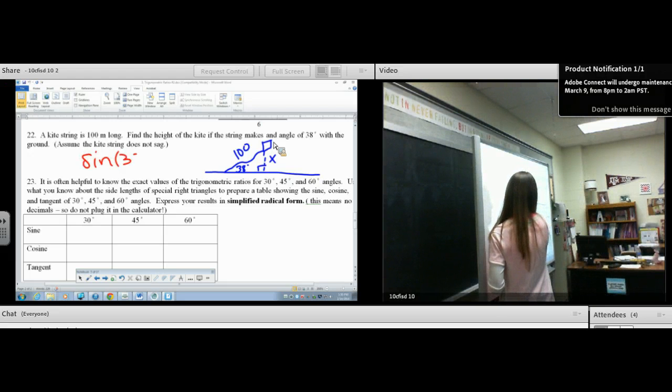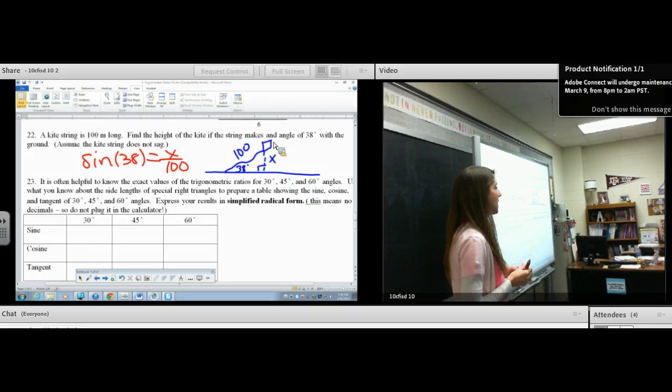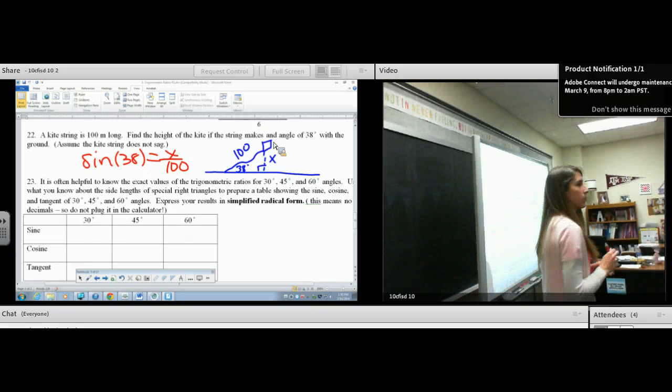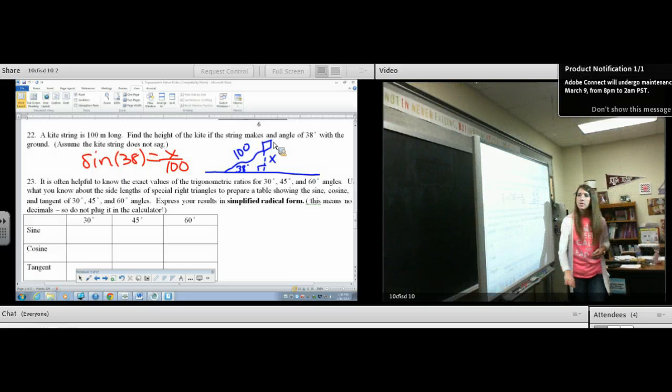Sine 38 equals opposite over hypotenuse. Allyson, multiply or divide? Multiply. I'm going to move on. Is that okay? Yeah. 100 times sine 38. Moving on.